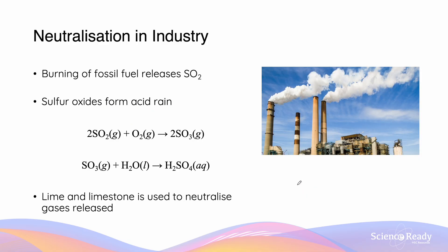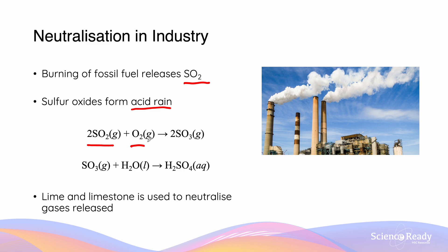In industry, the burning of fossil fuels releases quite a lot of SO2, which is sulfur dioxide gas. Sulfur oxides are particularly bad because they form acid rain when reacting with water in the atmosphere. For example, SO2 reacts with O2 to form sulfur trioxide, SO3.